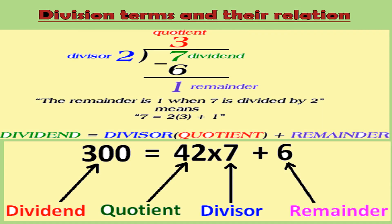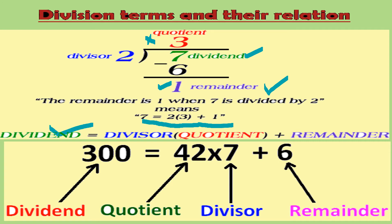Now let us look at division terms and their relations. For example, 7 divided by 2: 7 is the dividend, 2 is the divisor, 3 is the quotient, and 1 is the remainder. We can check our answers using the formula: dividend = (divisor × quotient) + remainder. So 7 = (2 × 3) + 1.